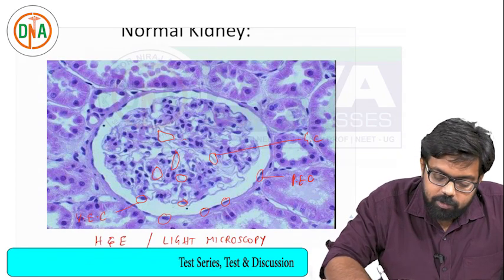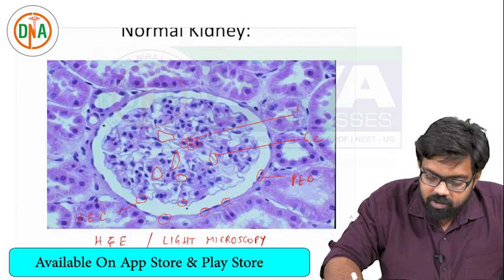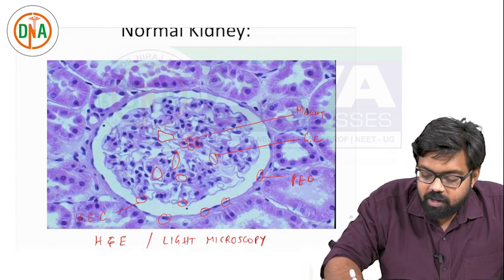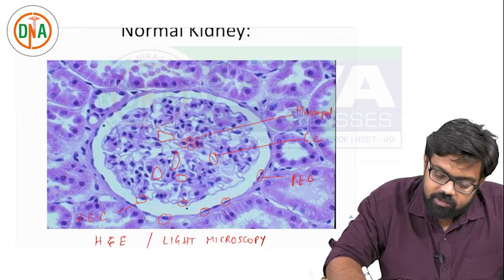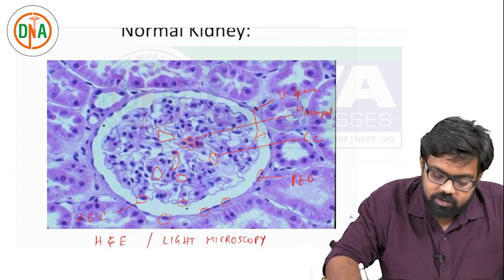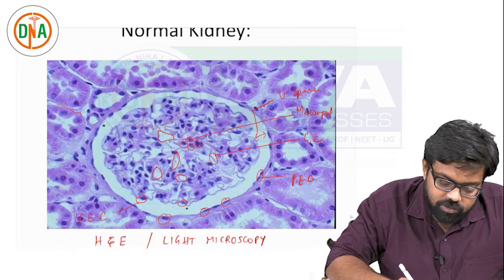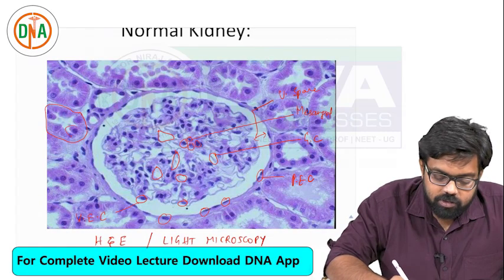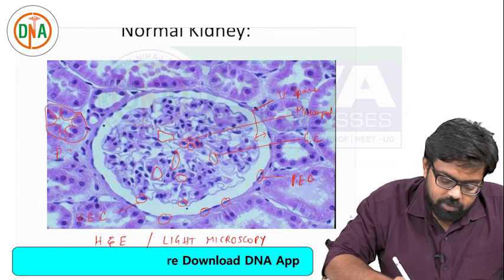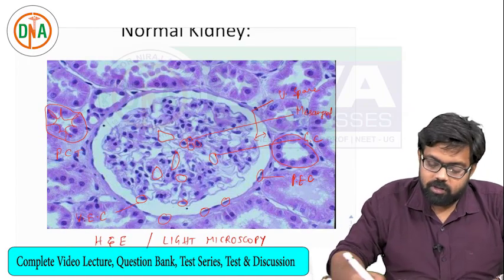In between these nuclei and these cells are nothing but the mesangial cells. This is the urinary space, very adjacent to which there are some cells with large eosinophilic cytoplasm - these are nothing but the proximal convoluted tubules.